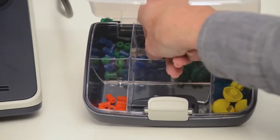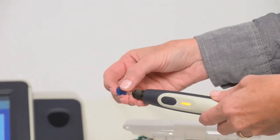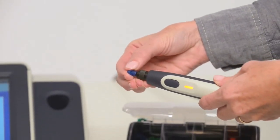Choose an ear tip based on ear canal size and place it on the probe tip. Make sure the ear tip is pushed down to the end.